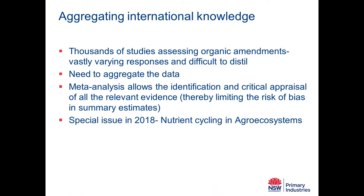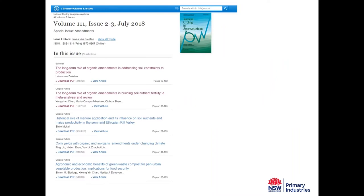One aspect to consider with meta-analysis is that there will always be outliers. The results give average values with error bars, but there will always be outliers, and it doesn't mean that either the meta-analysis or a particular study is incorrect if there are differences. Here are some of the papers that were in that special edition in Nutrient Cycling in Agroecosystems — I can send through the link later if anyone's interested.